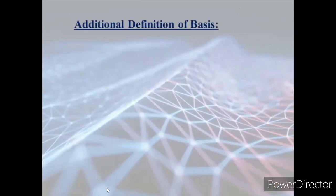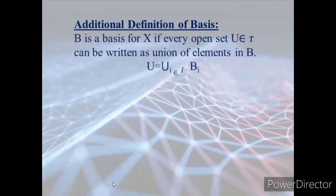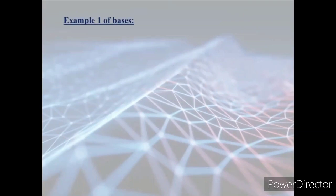This is the additional definition using union. B is a basis for x if every open set u, a member of the topology, can be written as a union of elements in the base. Whatever the basis is, if you take their union it will become the topology.